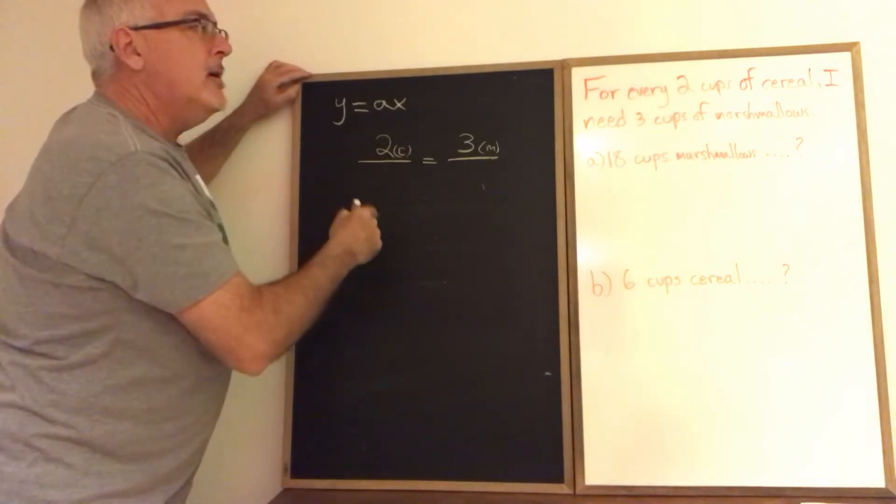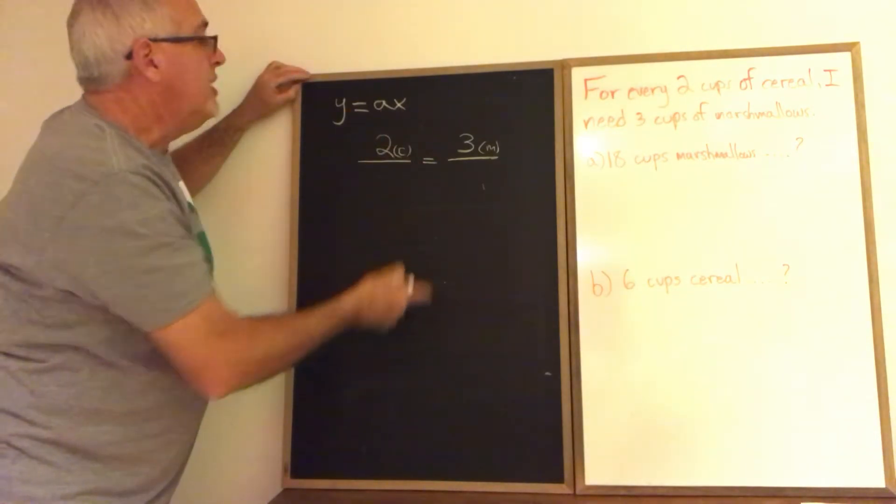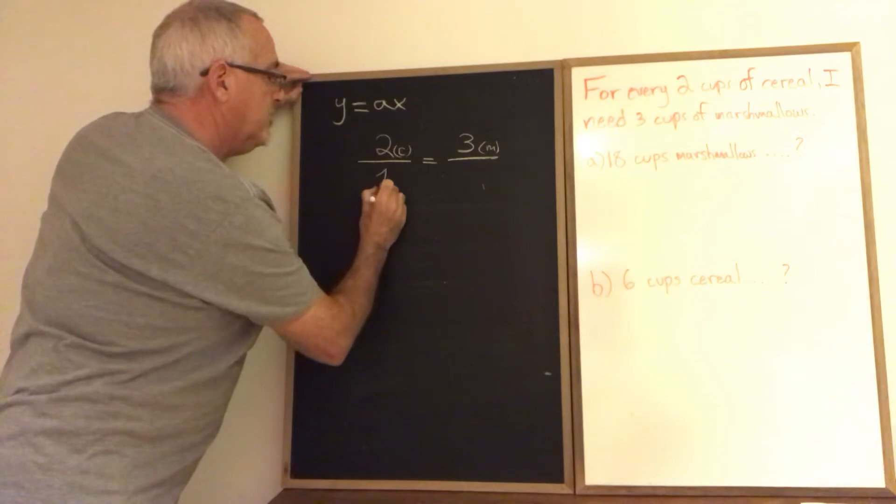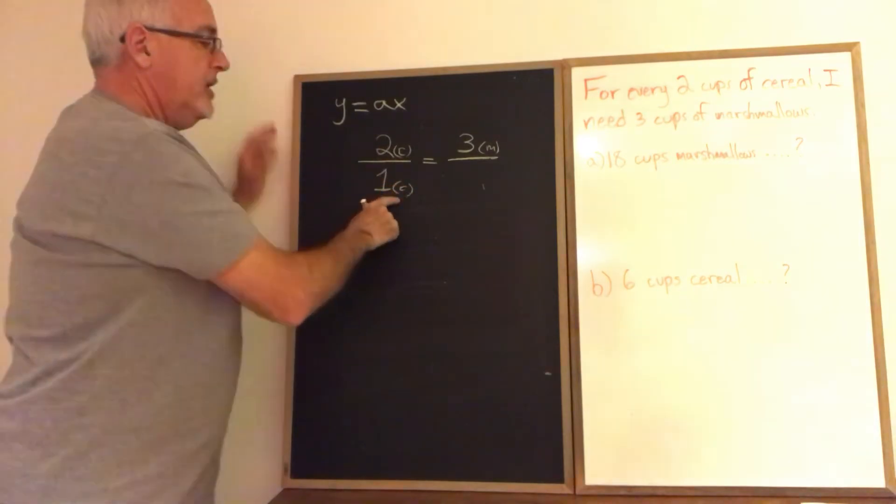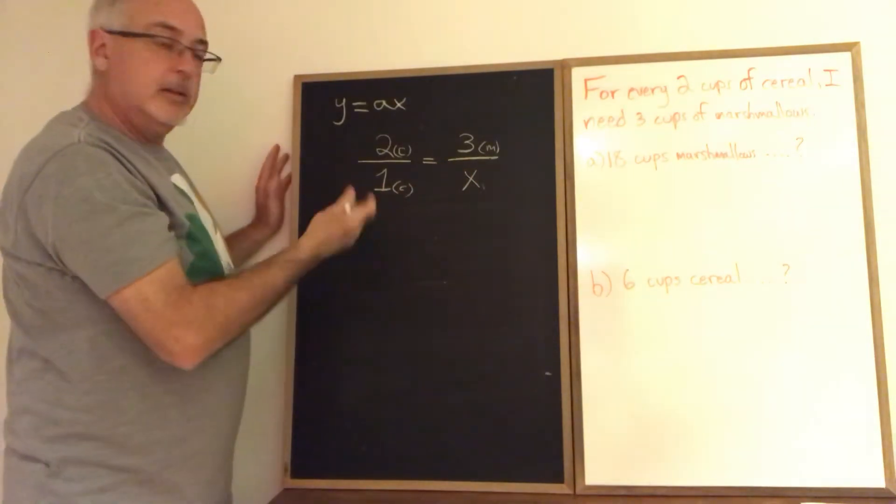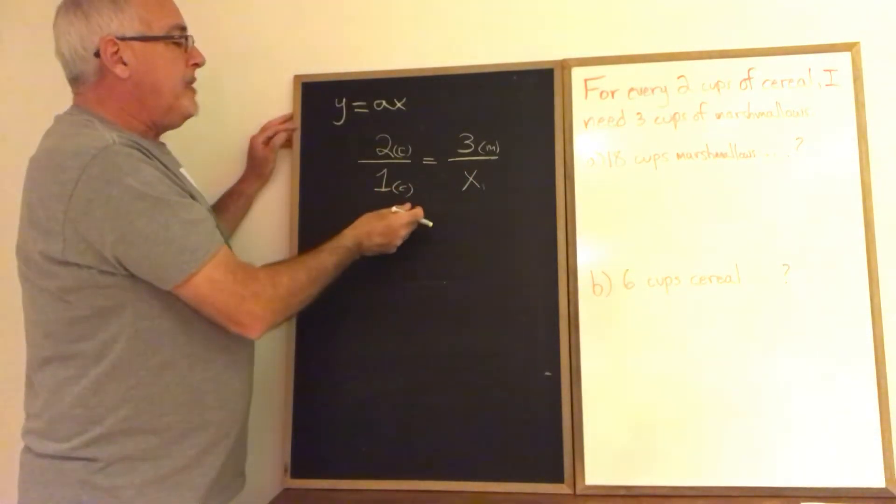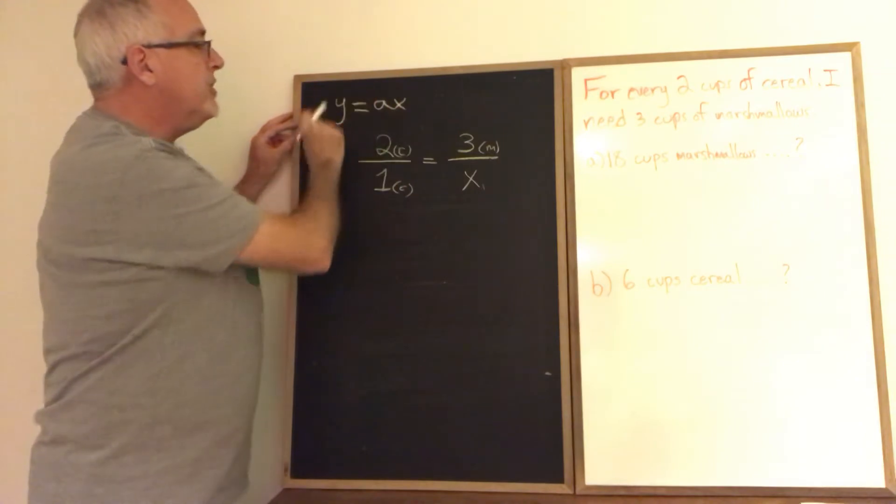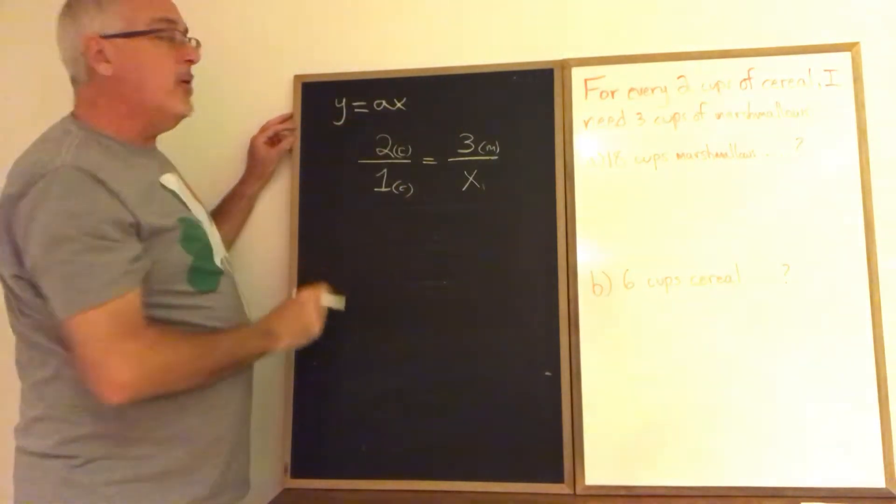I want to know how much marshmallows do I need for every one cup of cereal. So I'm putting a one down here and an X there. I'm going to use this proportion to solve and figure out what number I need so that I can build my model with the form Y equals AX.